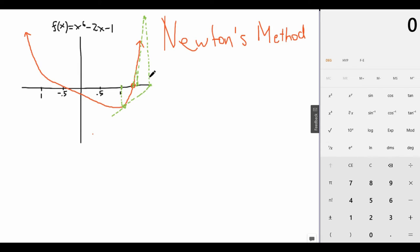So let's try to put this into more mathematical terms. If, let's suppose, you start with a guess, let's call it x_0. So what would the equation of this tangent line be, this first tangent line right here? Well, first, let's find the point of tangency. Of course, this would be (x_0, f(x_0)).